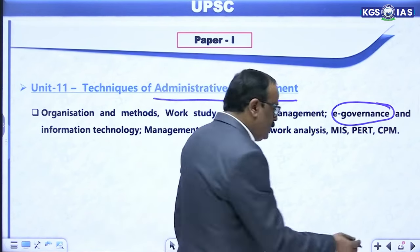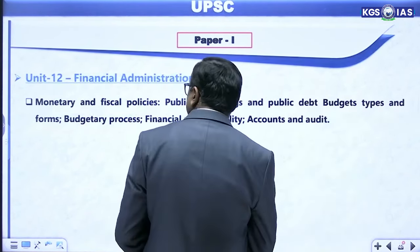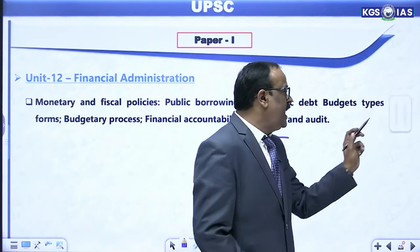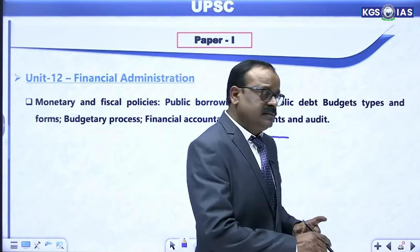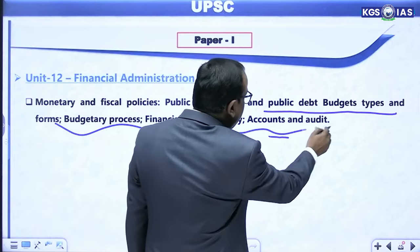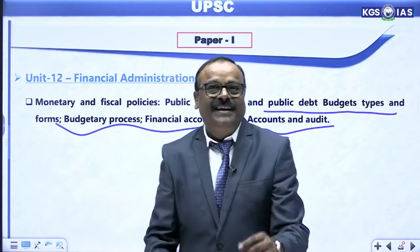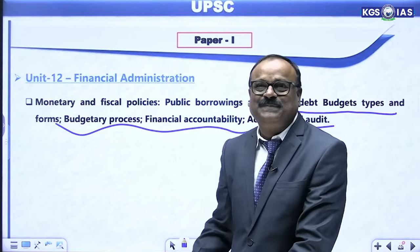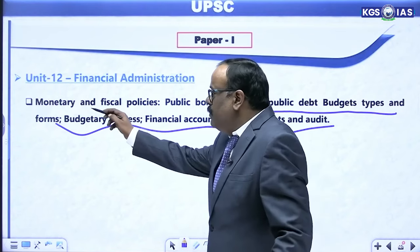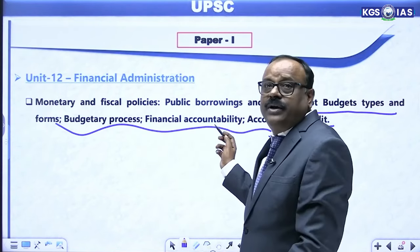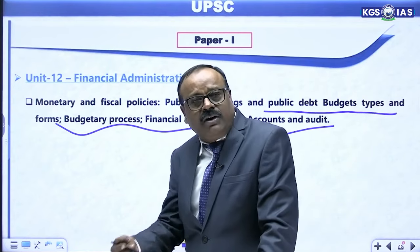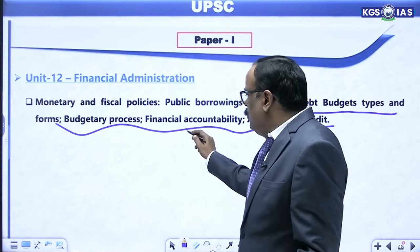The 12th unit of paper 1 is financial administration. Topics here include monetary and fiscal policies, public borrowing, public debt, budget types, budgetary process, financial accountability, accounts and audits, and CAG. All these topics are very much related to budget and Indian economy — monetary and fiscal policy, public borrowings, debt, types of budgets, accounts and audits, and the CAG — all of which you also find in Indian economy.